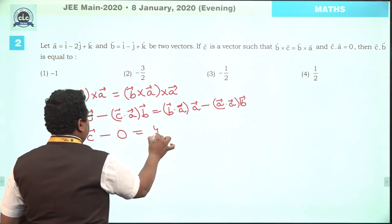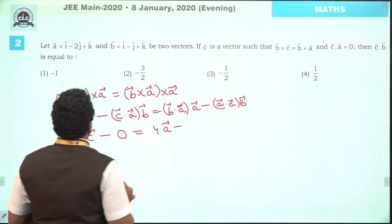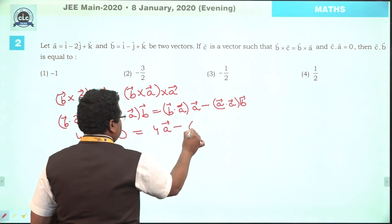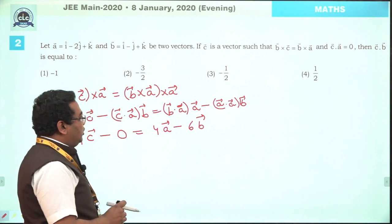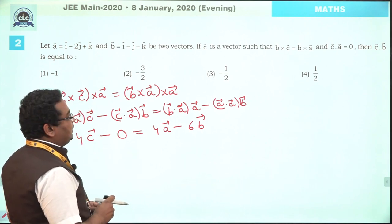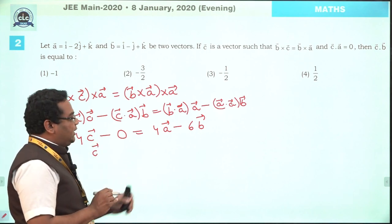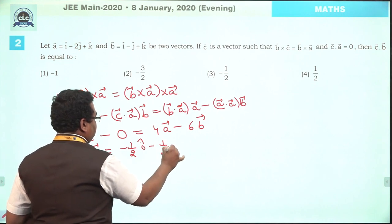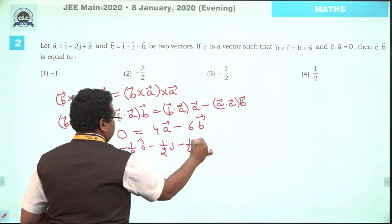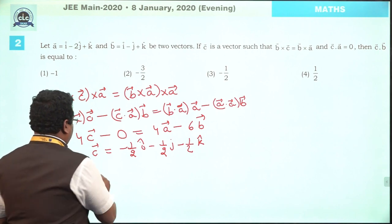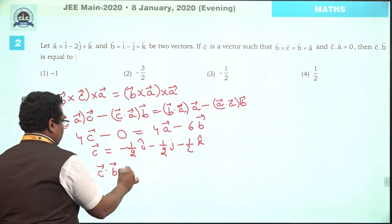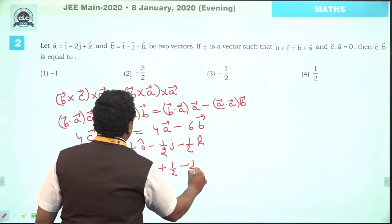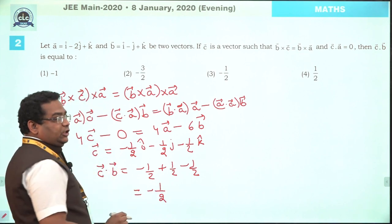B dot A equals 1 plus 2 plus 1, that is 4 times C vector, and C dot A is given as 0. So 4C = 4A, and A dot A is modulus of A squared which is 1 plus 4 plus 1 equals 6. Putting values, C vector equals minus half i-cap minus half j-cap minus half k-cap. So C dot B equals minus half plus half minus half, which is minus half — option number 3.